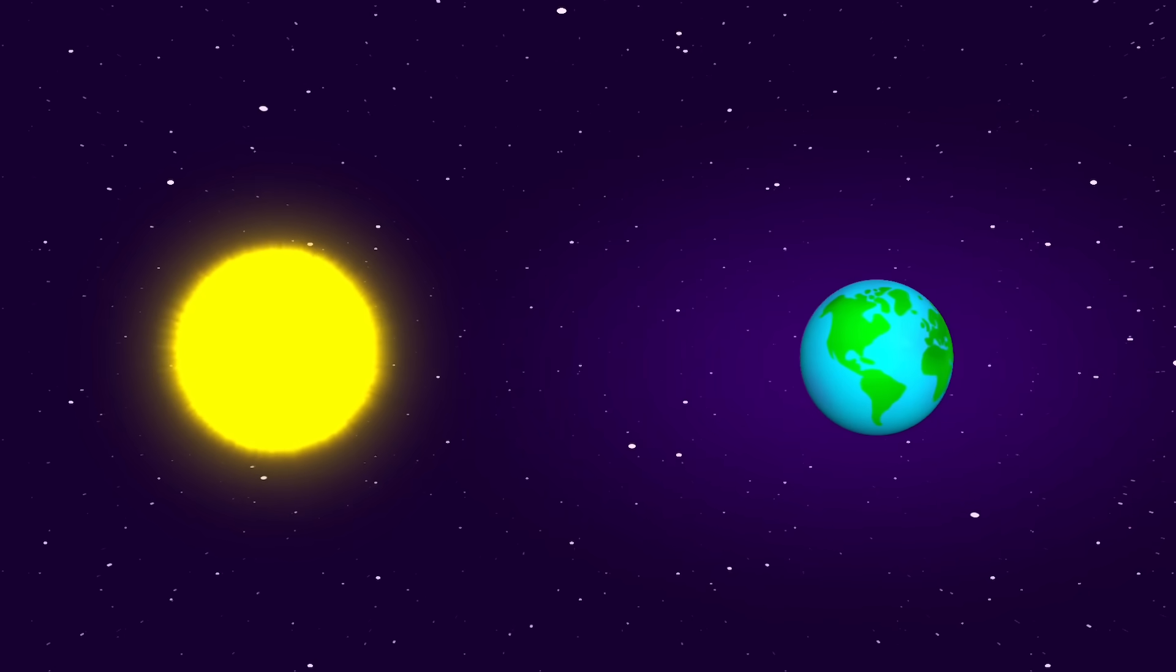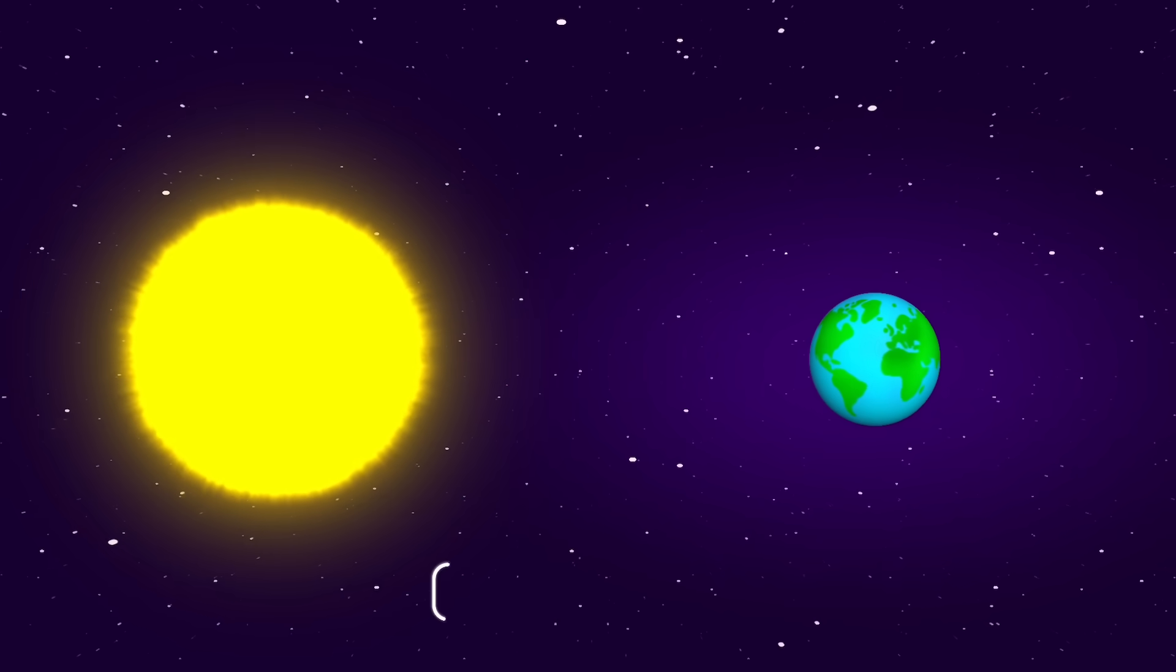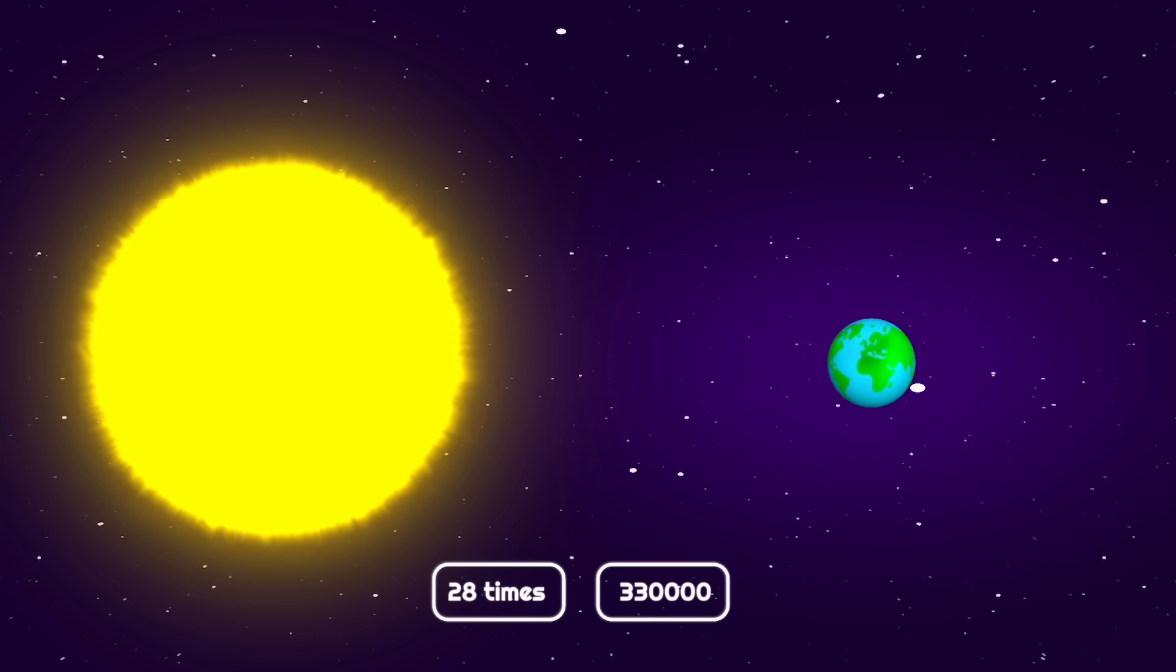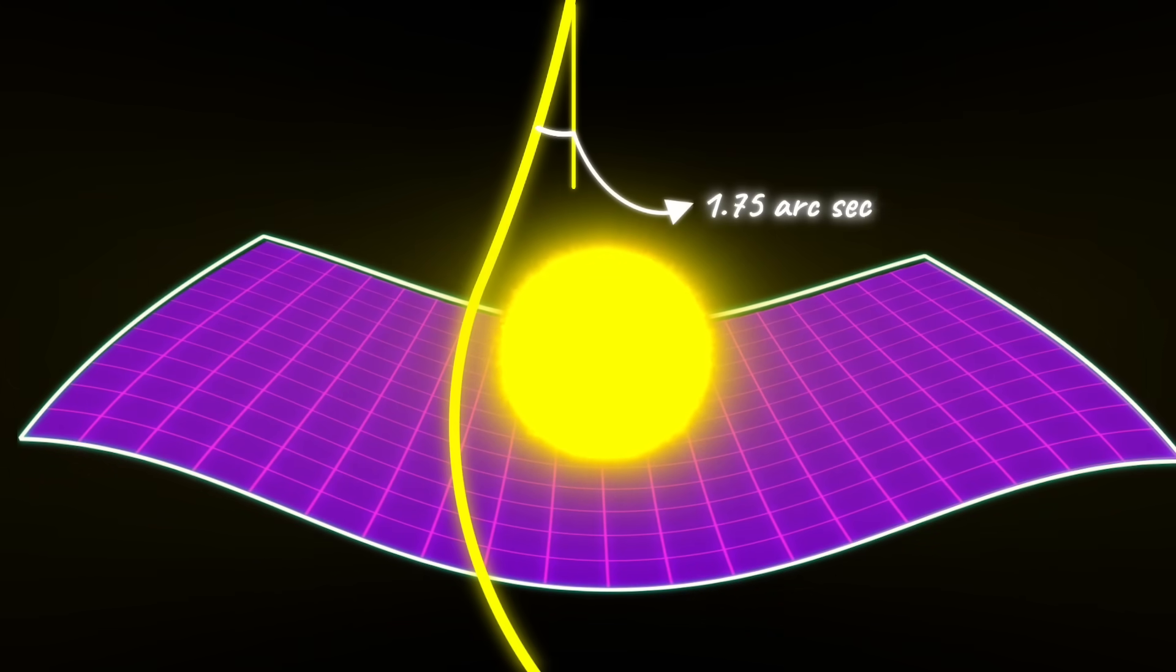The sun was the strongest gravity when it comes to our nearby things. Its gravity is 28 times stronger than Earth's because its mass is 330,000 times bigger. If we calculate what will happen in that gravity, the gravity will bend the light to 1.75 arcseconds.